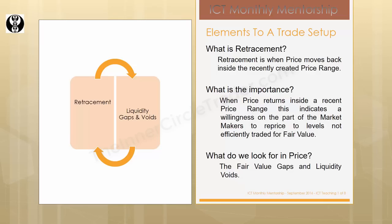You can define the range by a high and a low and trade inside that range. That was the beginning basis point of how I brought a lot of people from that forum into the understanding of an order block. What's the importance of the retracement? When price returns inside a recent price range, this indicates a willingness on the part of the market makers to reprice to levels not efficiently traded for fair value. When we're thinking retracement, the go-to ICT tools are liquidity gaps and liquidity voids. When we see real quick run ups or run downs in price — real quick rallies — many times that range will want to come back in and close that in.